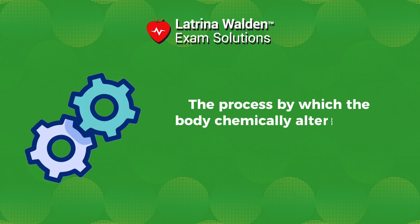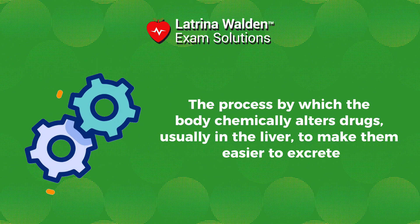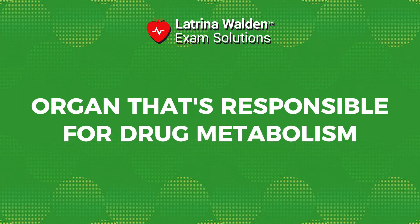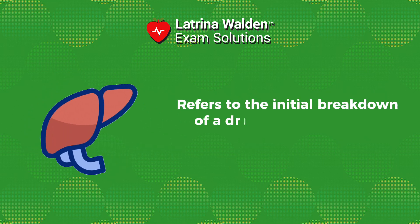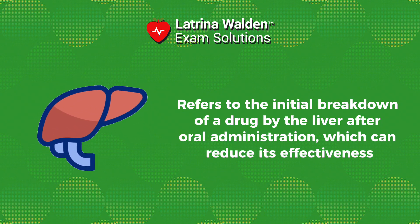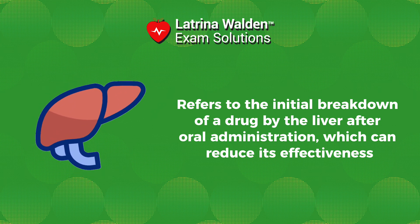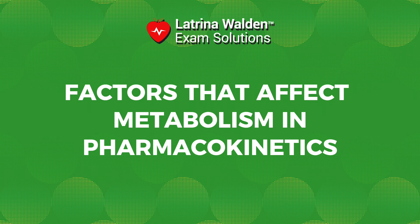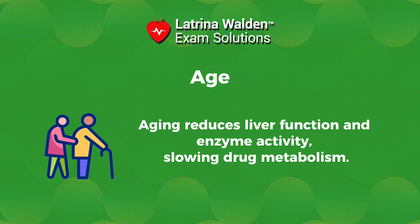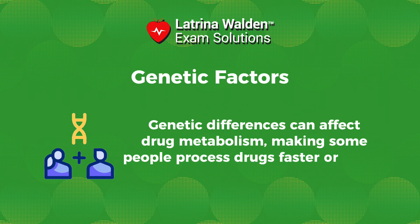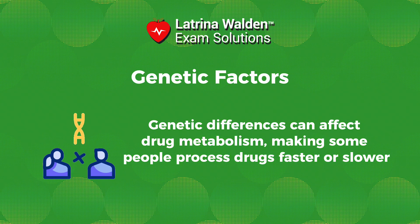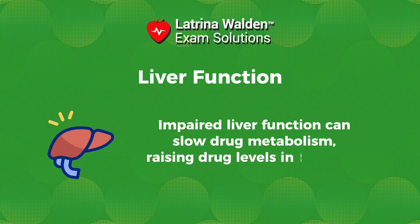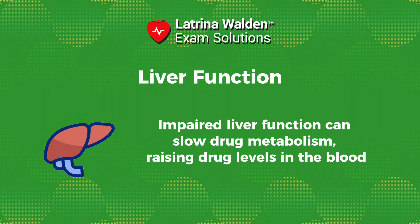Metabolism is the process by which the body chemically alters drugs, usually in the liver, to make them easier to excrete. The liver is the primary organ responsible for drug metabolism. First-pass metabolism refers to the initial breakdown of a drug by the liver after oral administration, which can reduce its effectiveness. Factors affecting metabolism include aging, which reduces liver function and enzyme activity, slowing drug metabolism — infants and the elderly may need lower doses. Genetic factors can affect drug metabolism, making some people process drugs faster or slower, influencing effectiveness and side effects. Impaired liver function can slow drug metabolism, raising drug levels in the blood and increasing the risk of side effects.